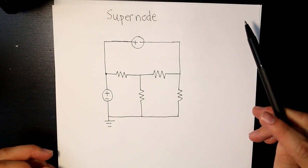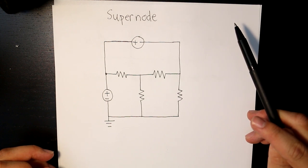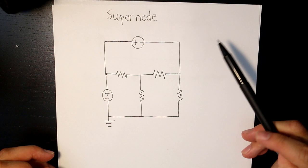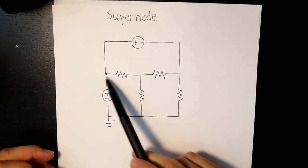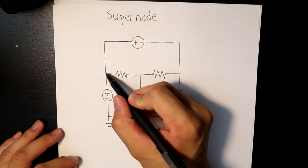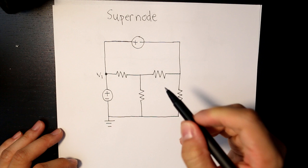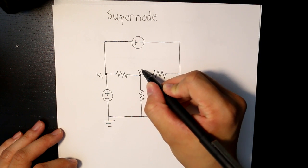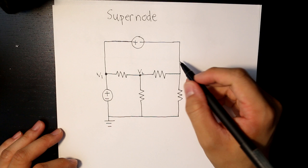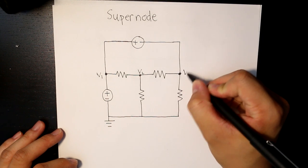So supernode consists of a voltage source that is connected between two different node voltages somewhere else in the circuit. So first let's identify what the node voltages are. The first one would be here and we can call this V1. The second one right here would be V2, and the third one would be right here V3.